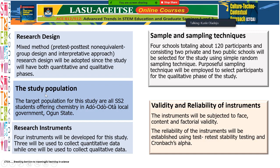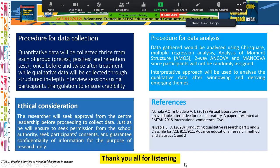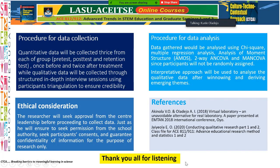The research design will be a mixed-method design. The quantitative aspect will use a pre-test, post-test, non-equivalent group design, while the qualitative aspect will adopt an interpretive approach. The study population comprises all chemistry students in the government area at SS2. The sample will include 120 participants from four schools — two private and two public — using purposive sampling for the qualitative phase. Four instruments will gather data: three for quantitative and one for qualitative.